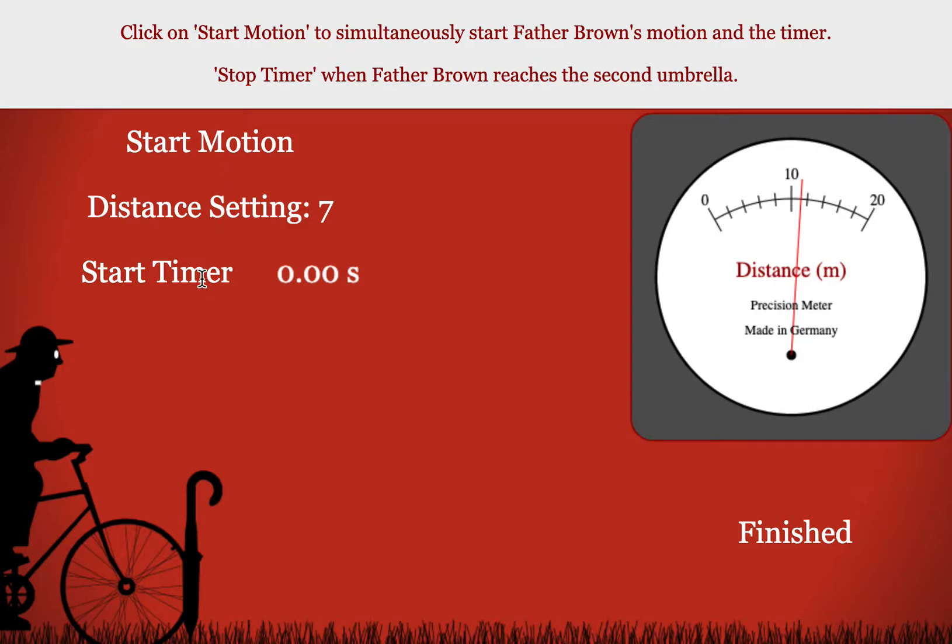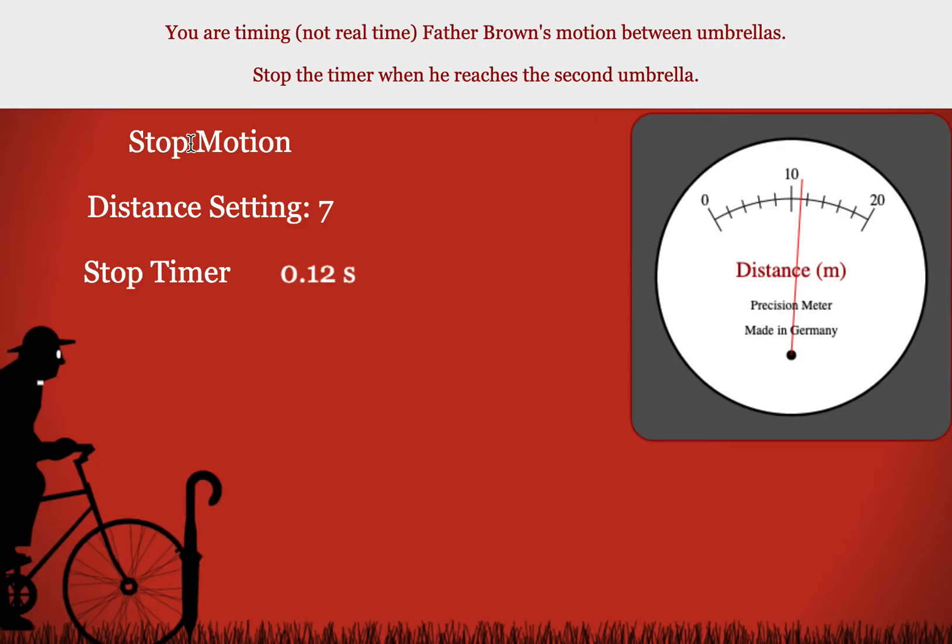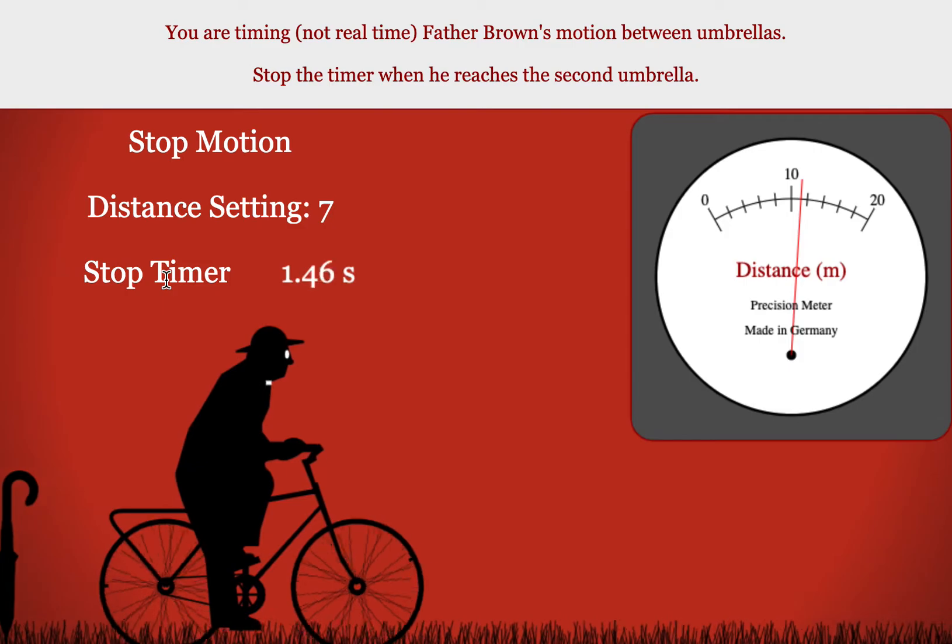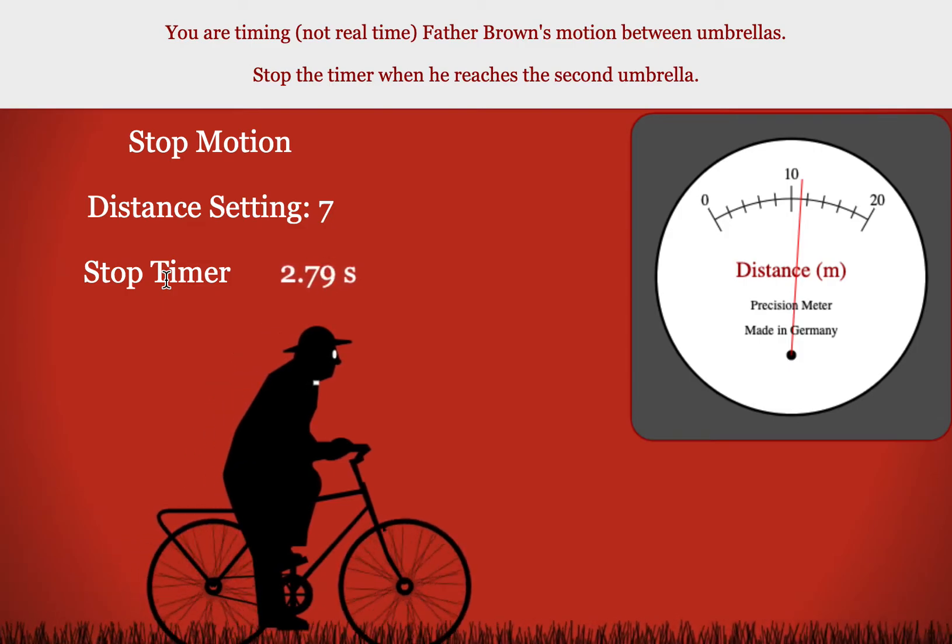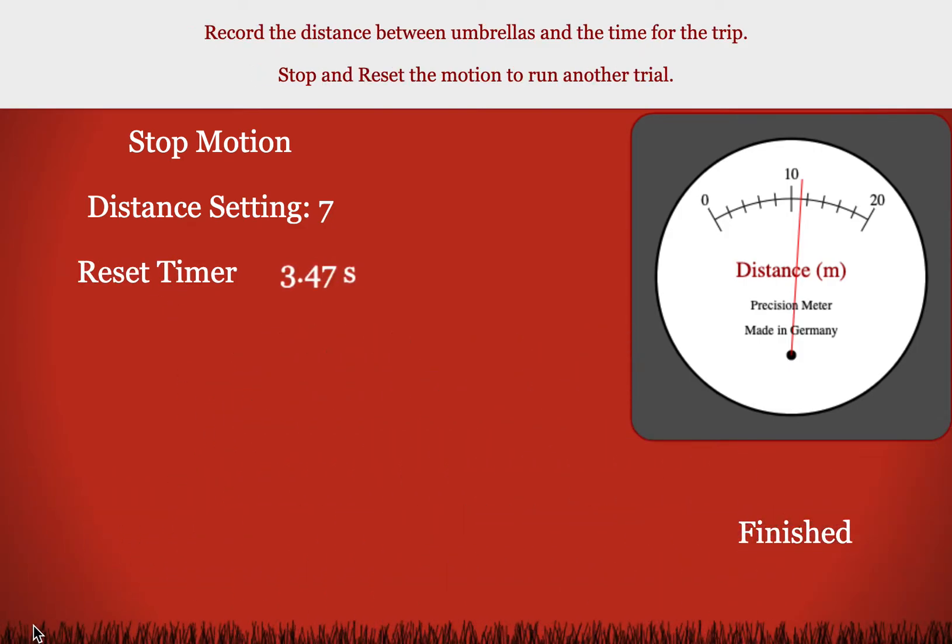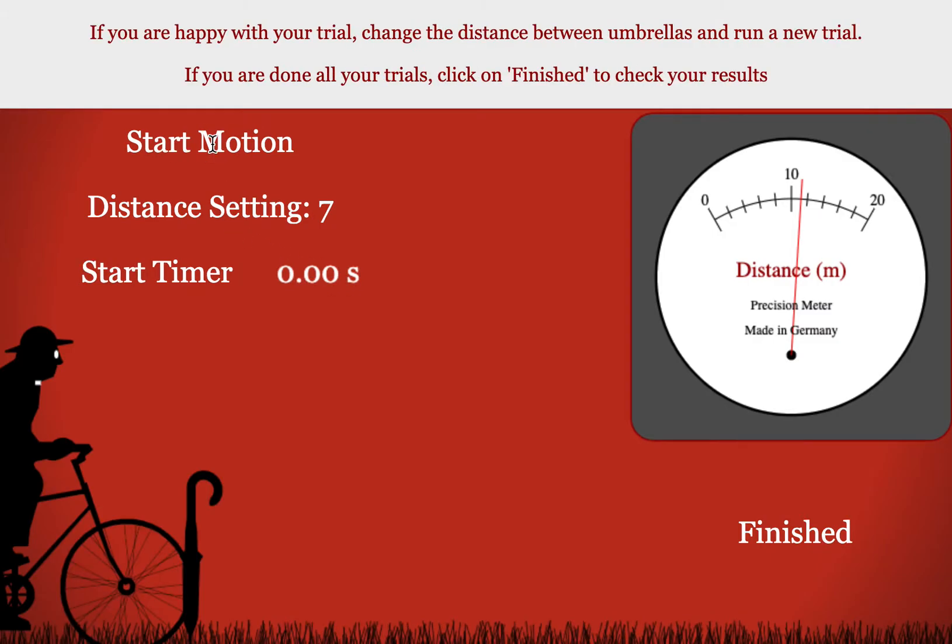When you hit start motion, the timer will simultaneously start. You allow the bike to accelerate at a constant rate. And when it passes by the second umbrella, you stop the timer. Record your distance and the time. Stop the motion. And then change your setting.